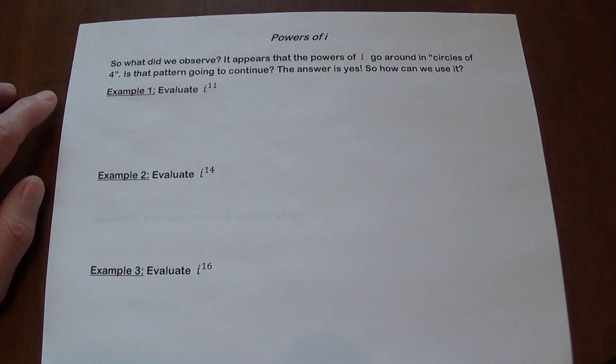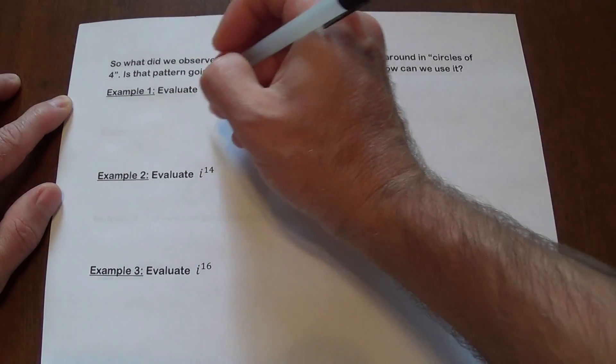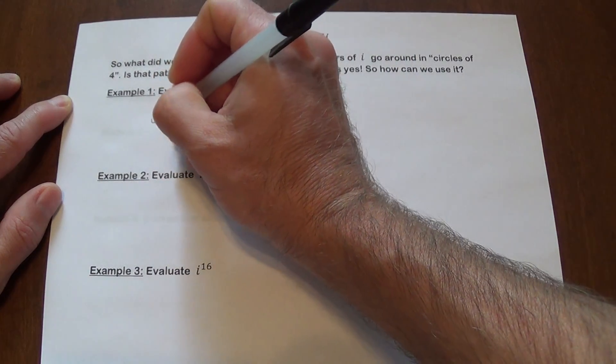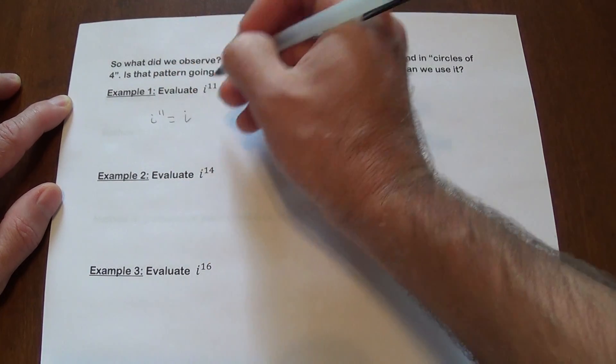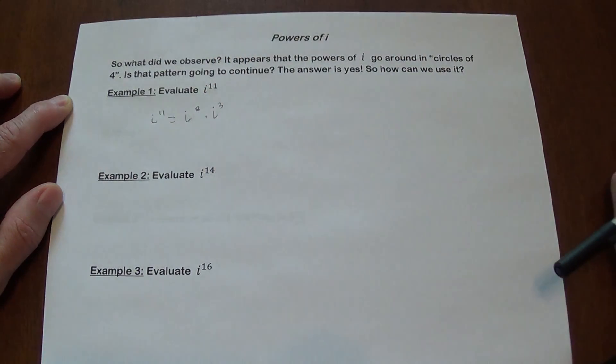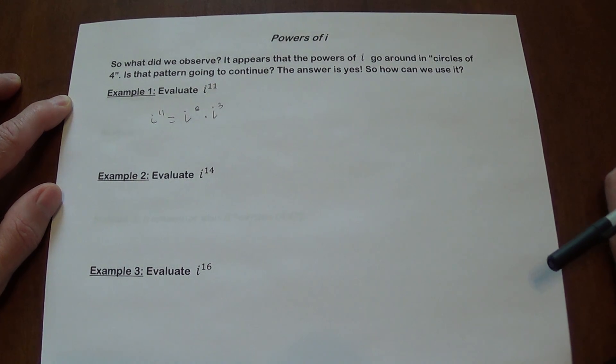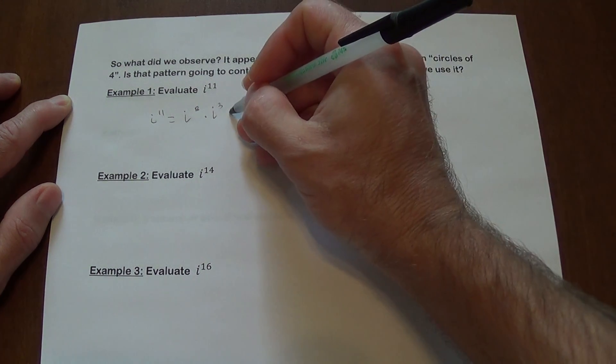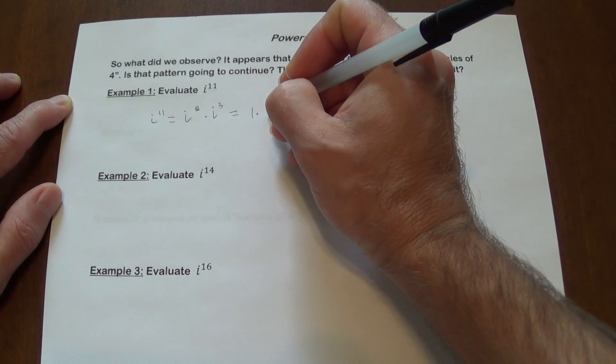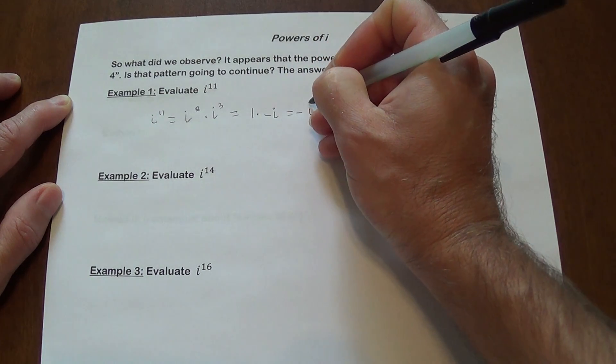If we need to try to do i to the eleventh power, what can we do here? It's a little higher. I can take i to the eleventh power and write it maybe as one possibility as i to the eighth times i to the third. As long as my exponents add up to eleven, I'm fine. What do we know from earlier about i to the eighth? i to the eighth is one. i cubed is going to be negative i. And the answer is going to be negative i.